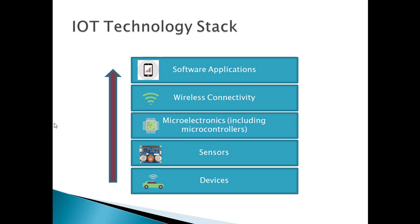Sensors. Some of those objects and devices will have sensors to collect data from the device. For example, an electric toothbrush may have a pressure sensor to detect if too much or too little pressure is being applied to your teeth. Other examples are temperature sensors and water quality sensors.